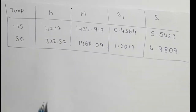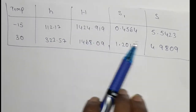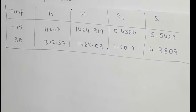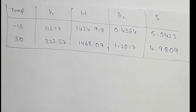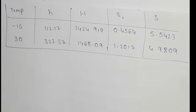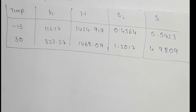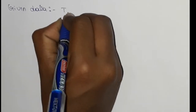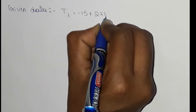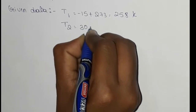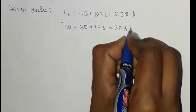We need to find H1, S1, and S2 from the ammonia properties at the same temperatures. Let's start. Given data: T1 equals minus 15 plus 273 equals 258 Kelvin, and T2 equals 30 plus 273 equals 303 Kelvin.